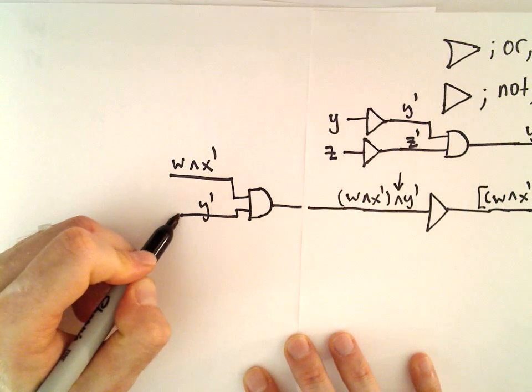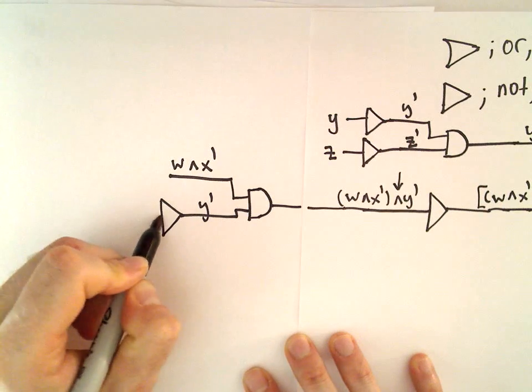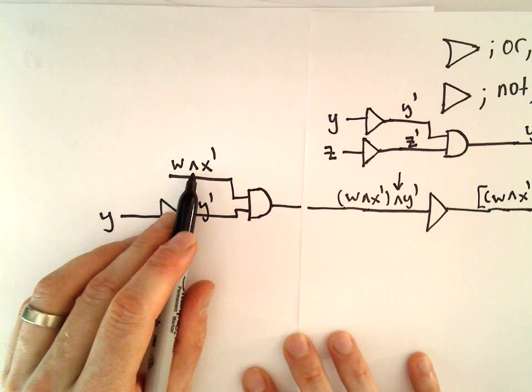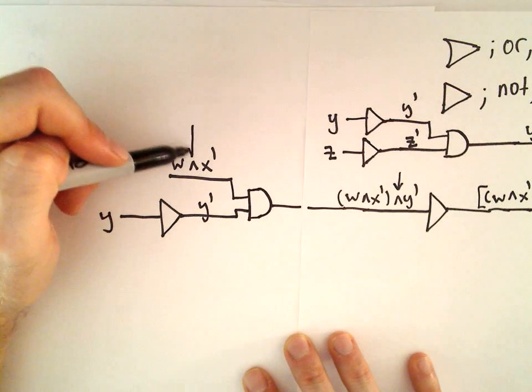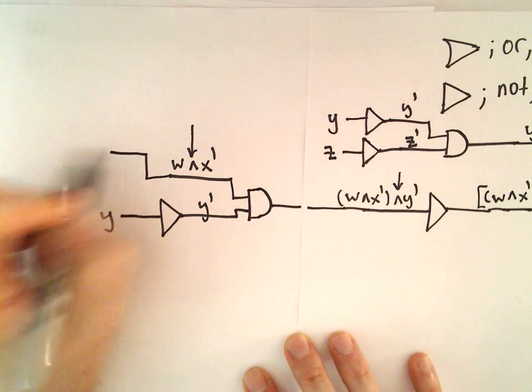To get the NOT Y part, we would create our NOT gate, and our input there would simply be Y. So now we're getting pretty close. Now we've got another AND statement between W and NOT X. So I'm going to give myself a bit more space here.